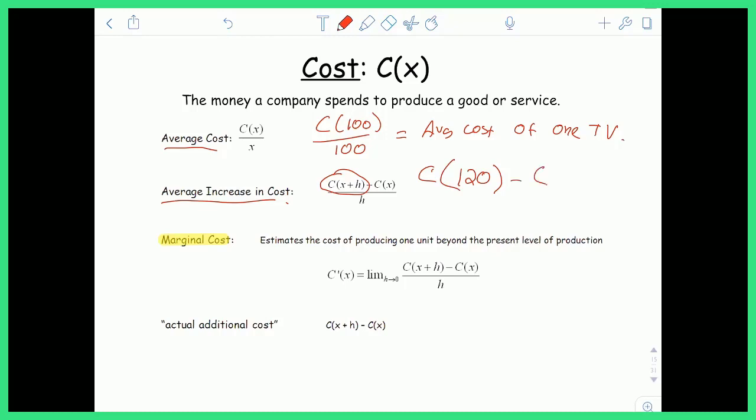minus the cost of producing the 100 TVs that I had originally examined. And if I divide this by h, which is the fact that I now changed it by 20 TVs, I added an additional 20 TVs, this value right here is going to give me the average increase in cost if I were to change my production level from 100 TVs to 120 TVs.